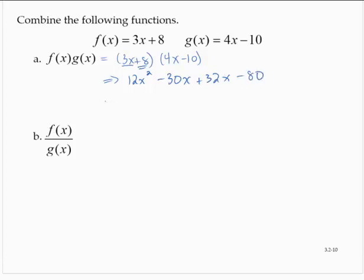And then combining like terms, we would have 12x squared plus 2x minus 80.